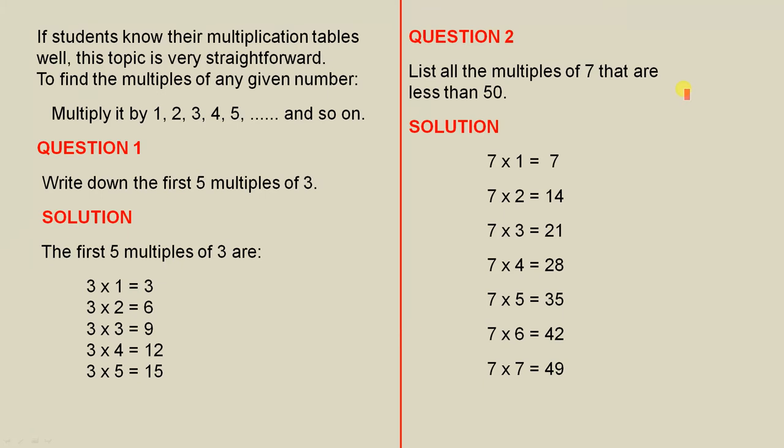Question 2: List all the multiples of 7 that are less than 50. So again, you do the 7 times tables and keep going so that the last number is just less than 50. So here they are.